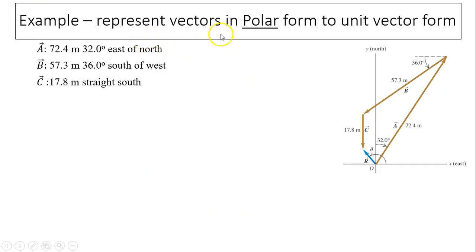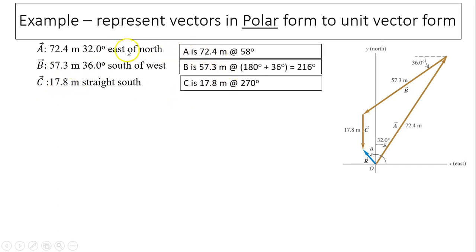Now let's represent vectors in polar form and change it to unit vector form. We have three vectors. We did this example before in 1.8 in the last video. Vector a is 7.2 meters at 32 degrees. You see this magnitude and direction. This is called polar form. Polar form gives you magnitude and an angle. The angle indicates direction. Here's b and c.